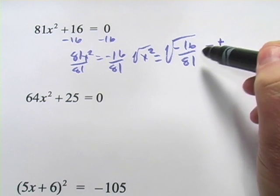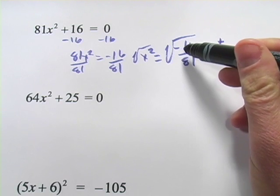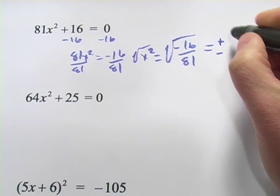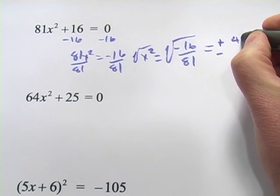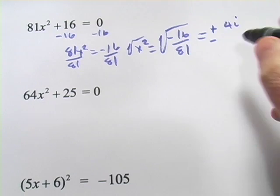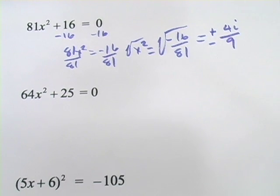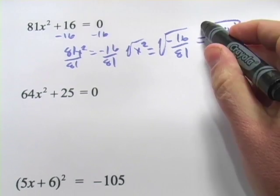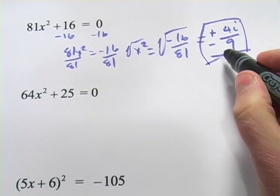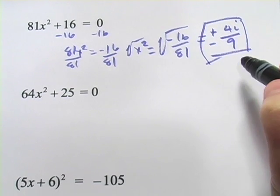The square root of negative 16 is going to be square root of negative 1 times the square root of 16, that's going to be i times 4 or 4i. And the square root of 81 is 9. And that's our answer, x equals positive or negative 4i over 9.